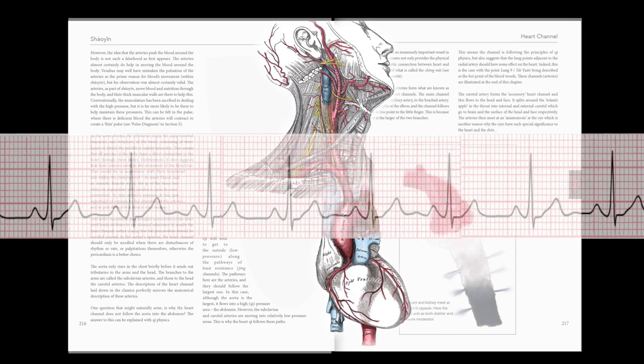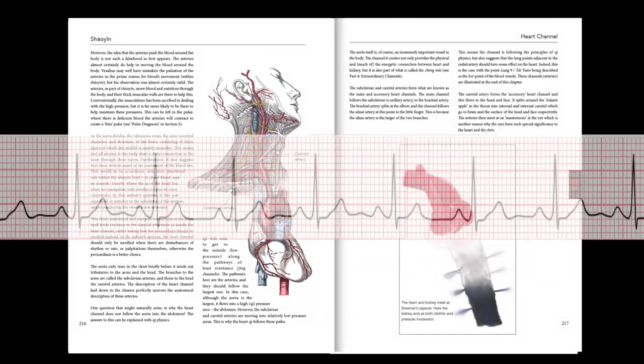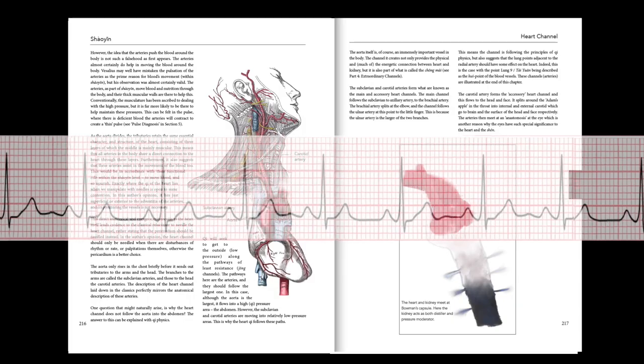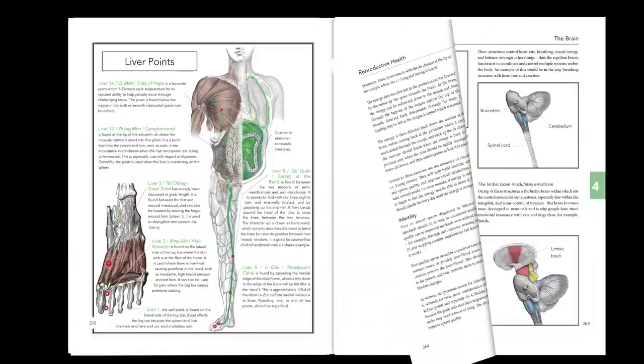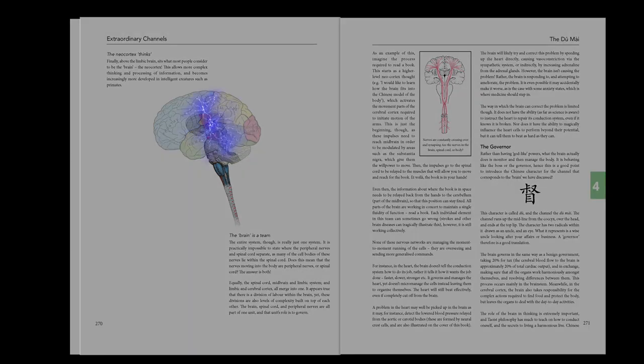Heart Qi is particularly strong and also pulsatile, which is why it is relatively easy to detect. Equally, brain Qi and muscle Qi are also fairly easy to measure.